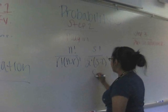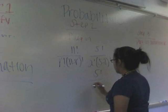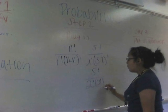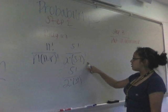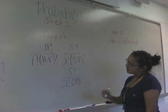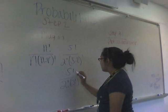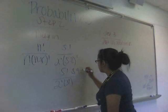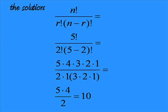That simplifies to five factorial over two factorial times three factorial. One way we can solve it is by doing the work out by hand — factorial means you multiply descending integers, like five times four times three times two times one — or we can actually just put it in the calculator. I'll show you both ways.